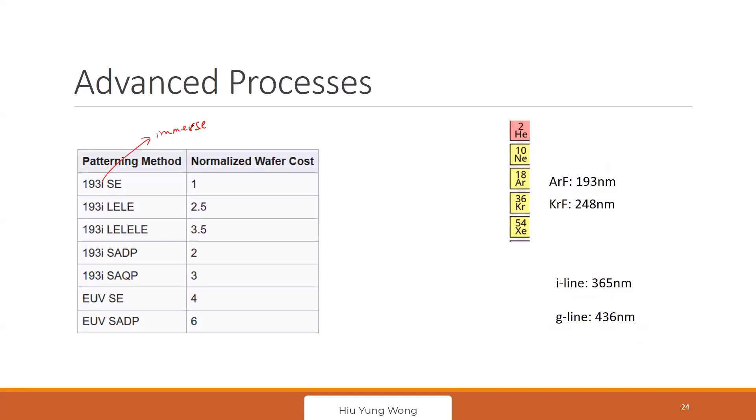You actually immerse the lens in water. Anyone has any idea? When I do lithography, this is wafer. And then I put the water here, a layer of water. And I put the lens here. Why do we want to do that? Why do I want to put the lens in the water? Something to do with the index of refraction. Very good. What happened? Water has a higher index of refraction, larger than one. What happened when it is larger than one? What happened to the wavelength?